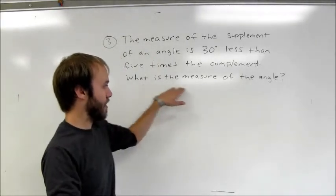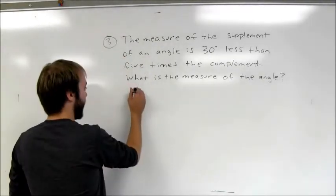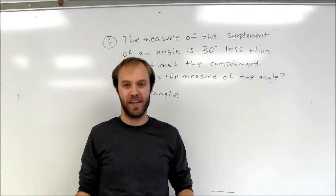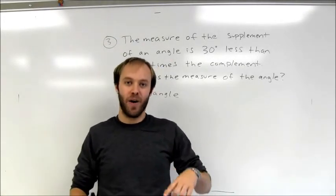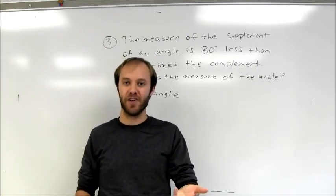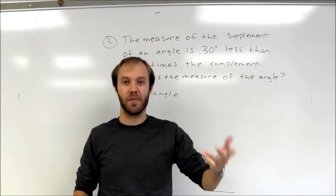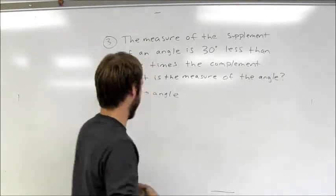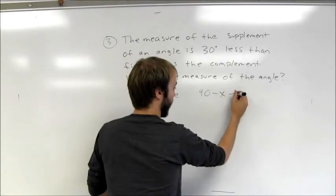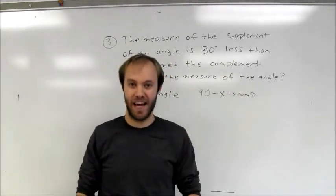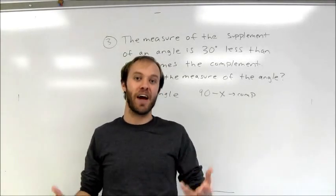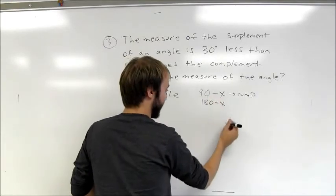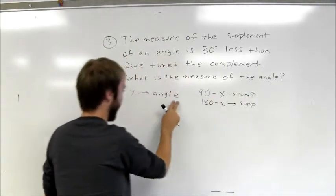Everything is based on the measure of the original angle, so I'll let x represent the original angle. The complement is 90 minus x, and the supplement is 180 minus x. For example, if the angle is 10 degrees, the complement is 90 minus 10; if it's 20 degrees, the complement is 90 minus 20. Similarly, 180 minus x gives the supplement of the x-degree angle.